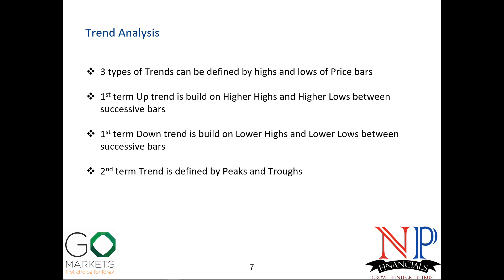The second term or medium term trend: if peaks are going up and drops are going up, the second term trend is up. If peaks and drops are both successively coming down, the second term trend is down. The third term trend is defined by P-star and T-star — these are peaks and drops but mathematically defined in a slightly different way from normal second term peaks and drops, which I will explain.